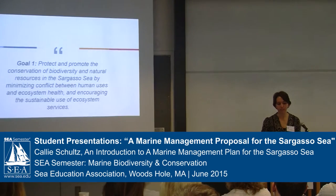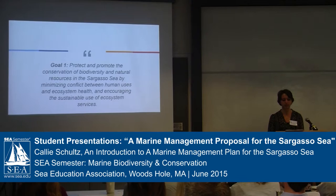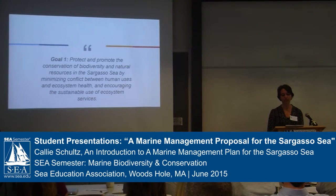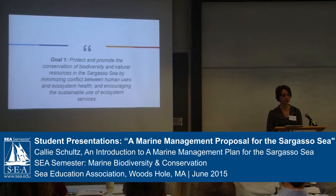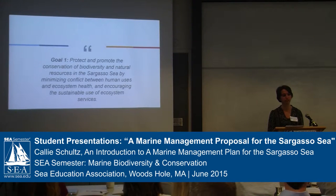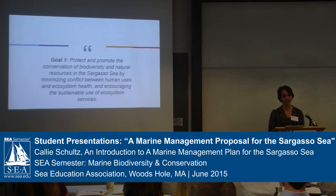For our first goal, we decided to protect and promote the conservation of biodiversity and natural resources in the Sargasso Sea by minimizing conflict between human uses and ecosystem health, and to encourage the sustainable use of ecosystem services. This goal focused on managing the ecological aspects of the Sargasso Sea. The Sargasso Sea supports hundreds of economically and ecologically important species, and the purpose of this goal is to minimize human impacts on these ecosystems and the species that rely on them.